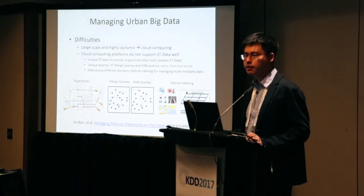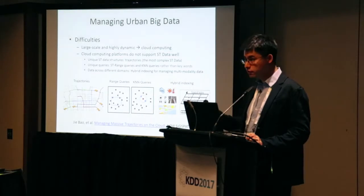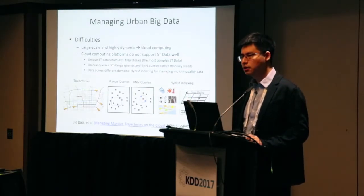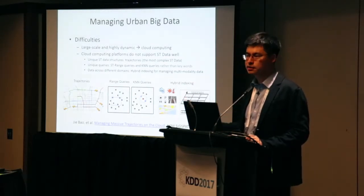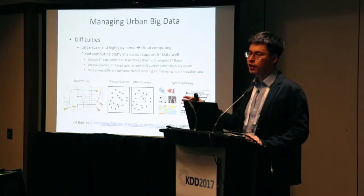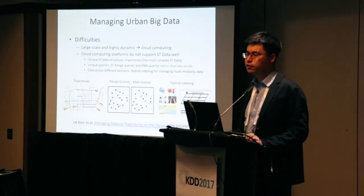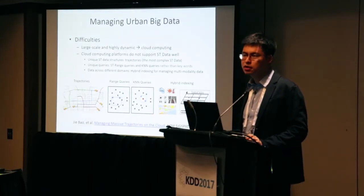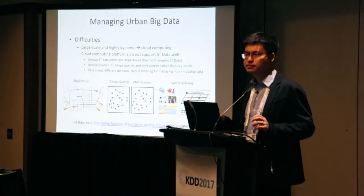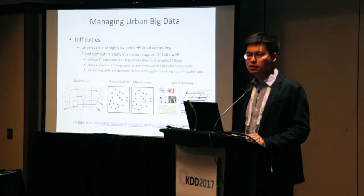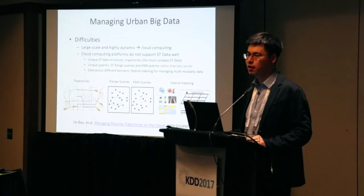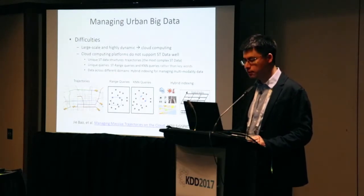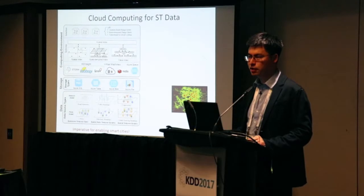The third reason is that urban computing requires harnessing a diversity of datasets, not just a single one. If we want to fuse knowledge from multiple datasets, we need to manage them organically in advance using a hybrid index structure that manages data across different domains. Without this, correlating datasets becomes very time-consuming and too slow for online applications.